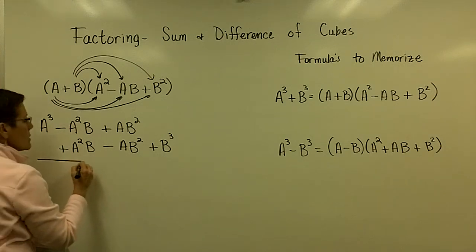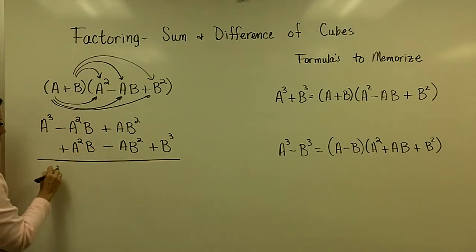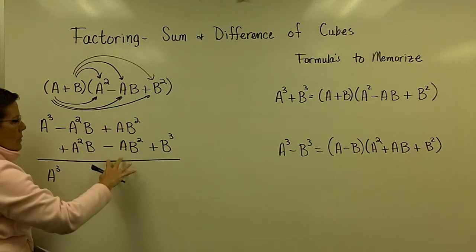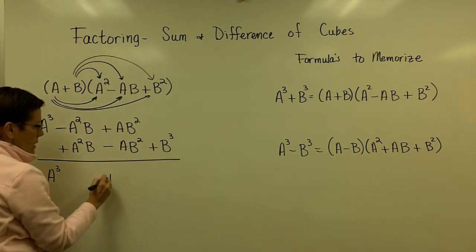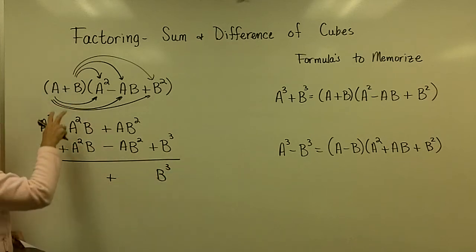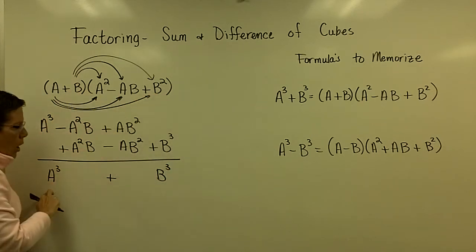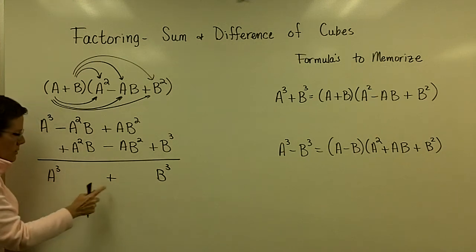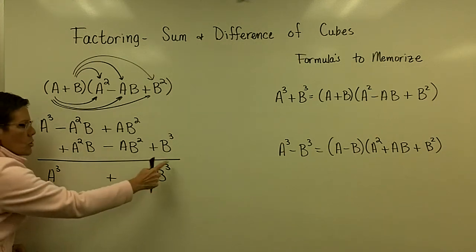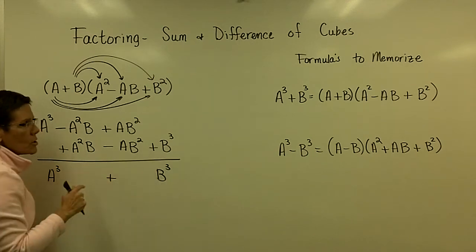When they collected their like terms, it ended up that all they had left was a cubed — those middle terms added to zero, those added to zero — and then at the very end, b cubed. So the product of this binomial times this trinomial always gives you what's called the sum of cubes, where a is cubed and b is cubed.